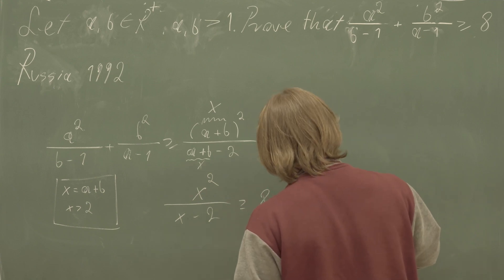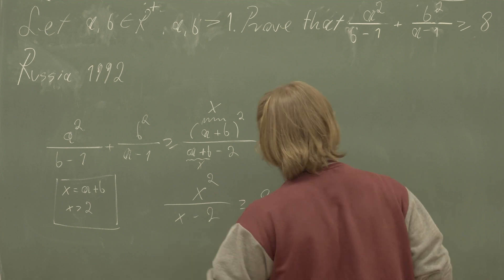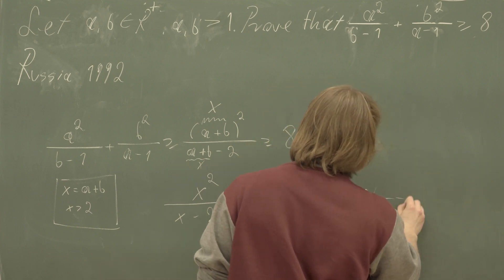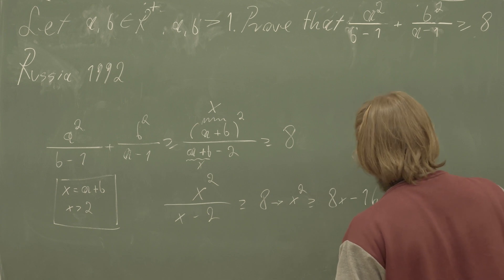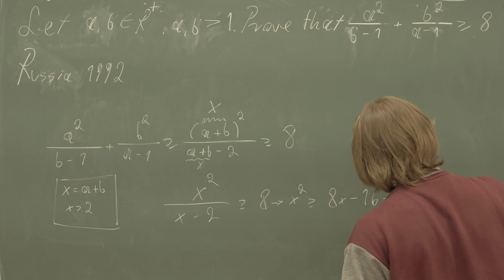We're going to get that x squared is greater than or equal to eight times x plus a negative sixteen. This is equivalent to saying that x squared minus eight x plus sixteen is greater than or equal to zero.